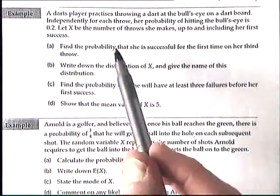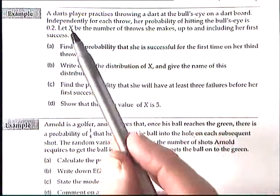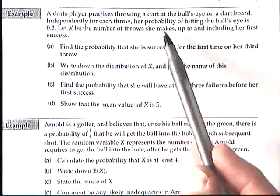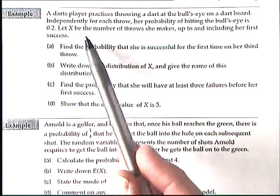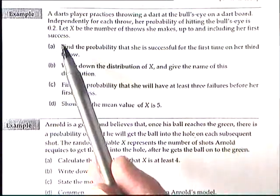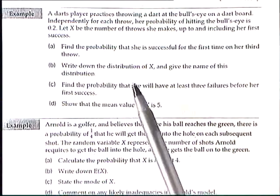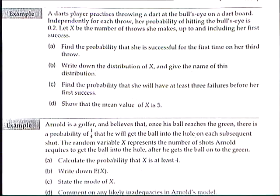So the second example: we've got a darts player practices throwing a dart at the bullseye on a darts board. Independently, for each throw, her probability of hitting the bullseye is 0.2. Let X be the number of throws she makes up to and including her first success. I'm going to jump to part B to start with. Write down the distribution of X and give the name of the distribution.